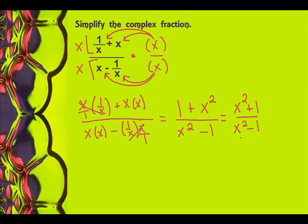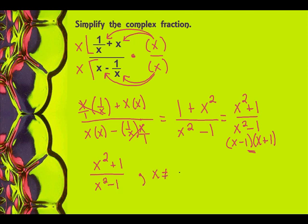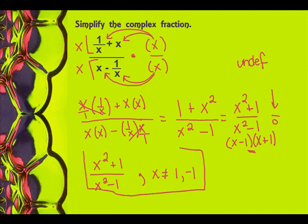Now you want to factor them if you can. The bottom for sure factors into x minus 1 times x plus 1, but the top doesn't factor without imaginary numbers. So my answer is going to be x squared plus 1 divided by x squared minus 1, but x cannot equal positive 1 or negative 1. Because if x equals positive 1, that makes the denominator 0, and if x equals negative 1, that also makes the denominator 0. Remember, that's undefined — we don't want that. So this whole thing is actually my answer.